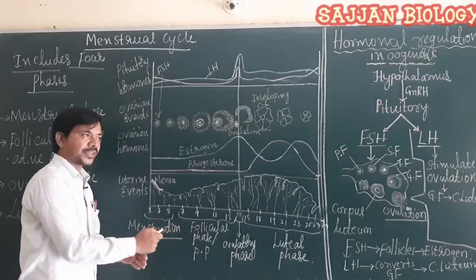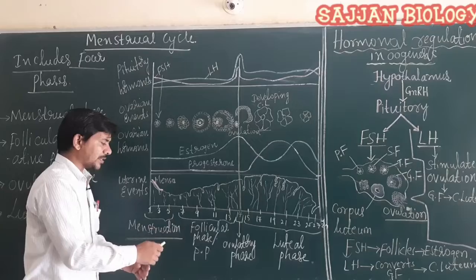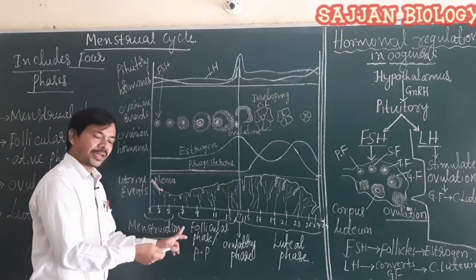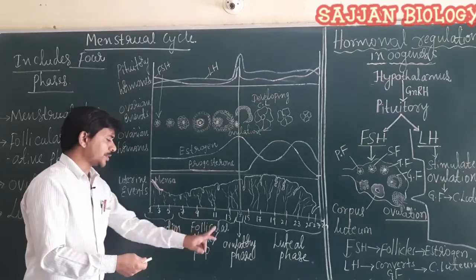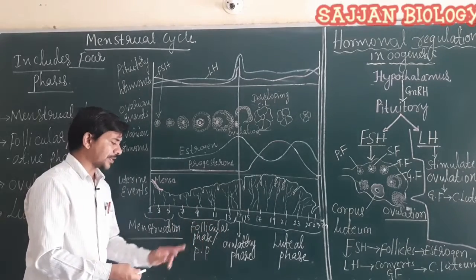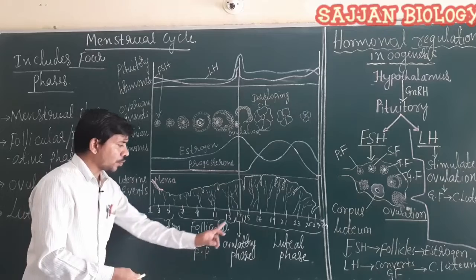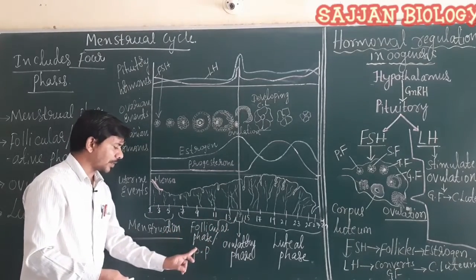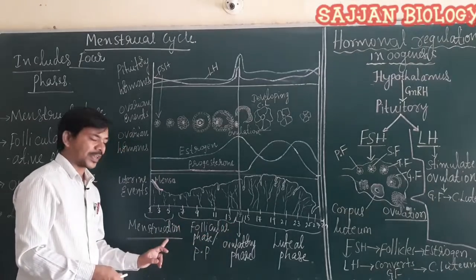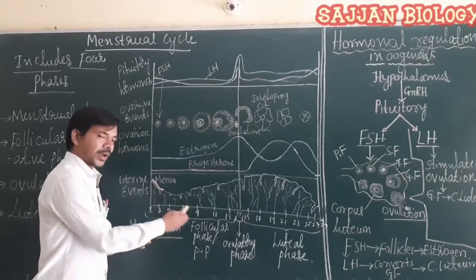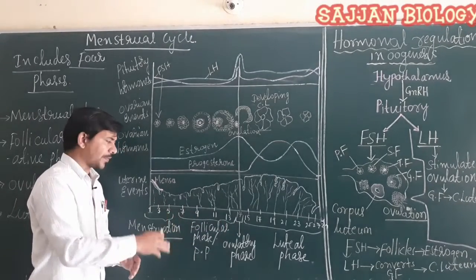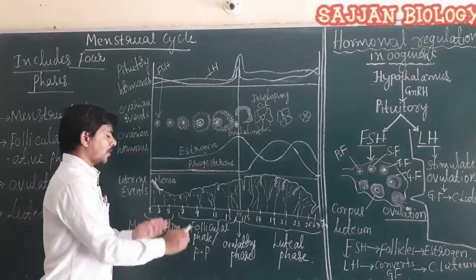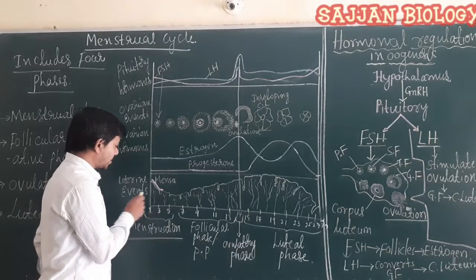After the menstruation phase there is the follicular phase. It is also called the post-menstrual phase, because it comes after menstruation. It is also known as the pre-ovulatory phase, because it occurs before ovulation. So the follicular phase is also called the post-menstrual phase or pre-ovulatory phase.